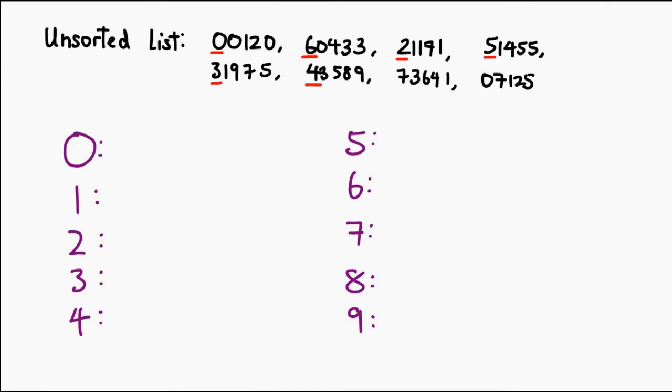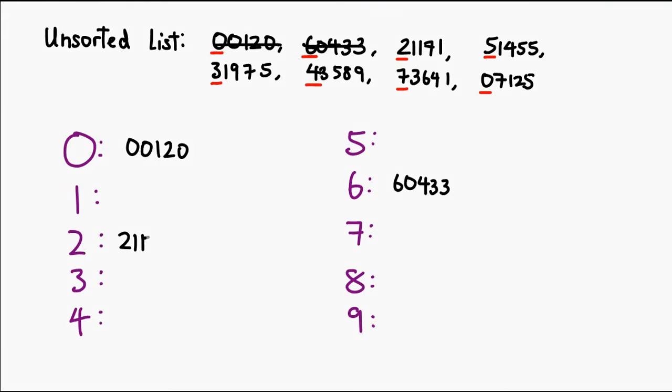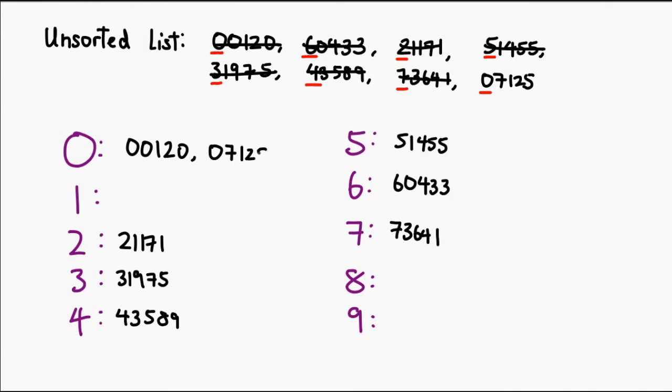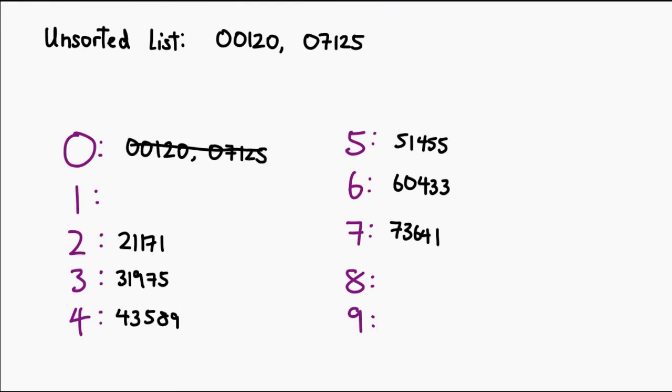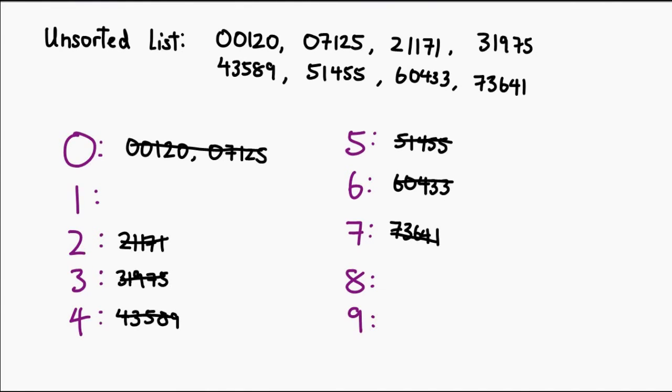We move the underline to the last digit, once again going left to right, grouping everything into their buckets and pulling them out. Notice what is happening here — the list actually comes out sorted. We did this without making a single comparison between individual elements in the list. All we did was compare the particular radix we were interested in and put items into a bucket. And that is the miracle behind Radix Sort.